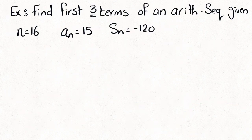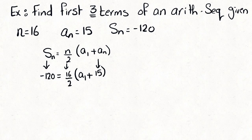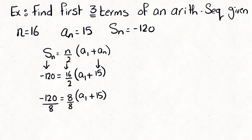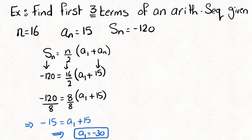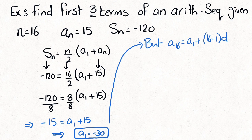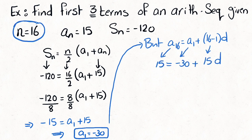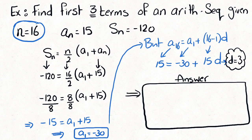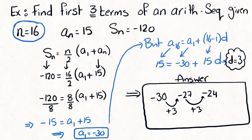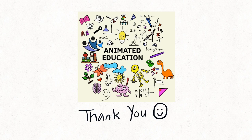In the last example, a1 is unknown. Apply the sum rule, replace all known values, and find a1 through simplification. Then, since n = 16, use a_n = a1 + (n − 1) × d to find d, and apply it to determine each successive term. That was the end of the lesson — thank you so much.